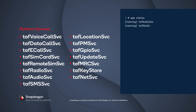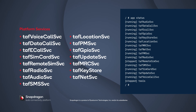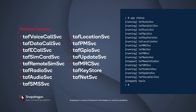We provide more than 20 telematics-oriented business services or platform services, as shown here. For example, TAF Voice Call Service for voice-correlated functions, TAF Data Call Service for data-related functions, and TAF E-Call Service for emergency call services — an important business service in telematics. Other services provide functions for SIM card management, location, SMS, power management, and application management.